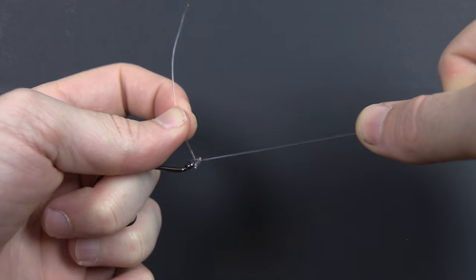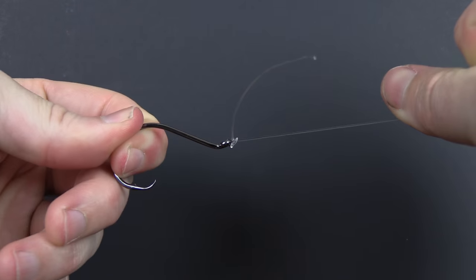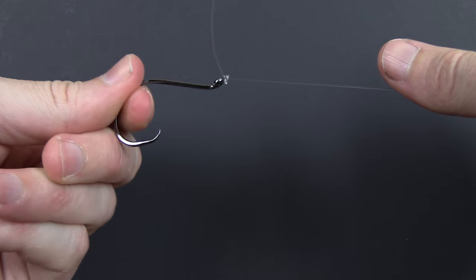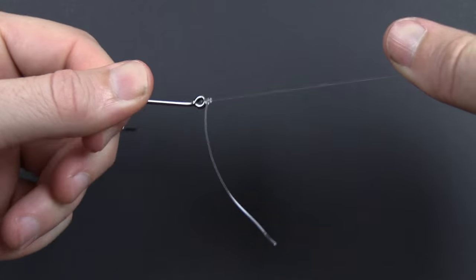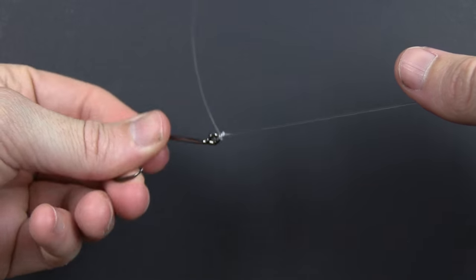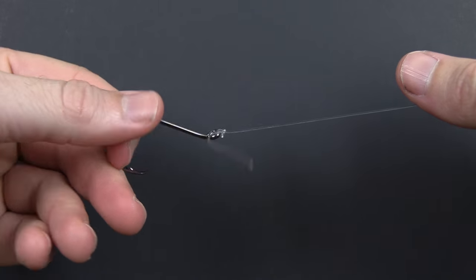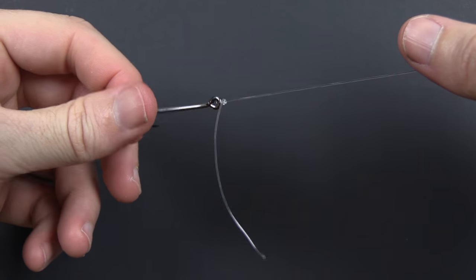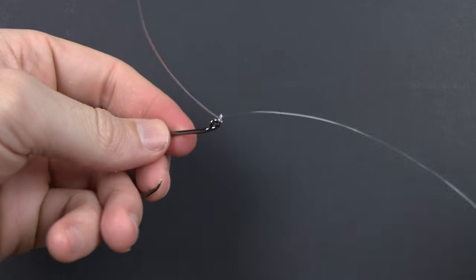And obviously you can do it really fast. I was going very slow for this tutorial, but that's it—this knot is tied. You can see the tag end is at a 90-degree angle. It is set. It is super small and surprisingly strong. I've done some preliminary testing on it.